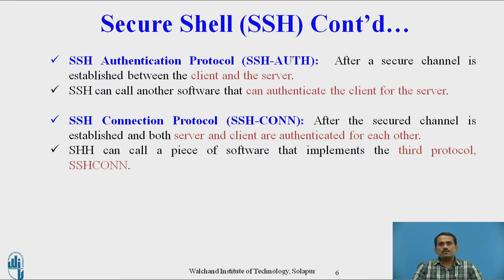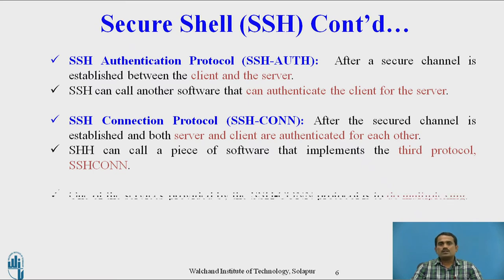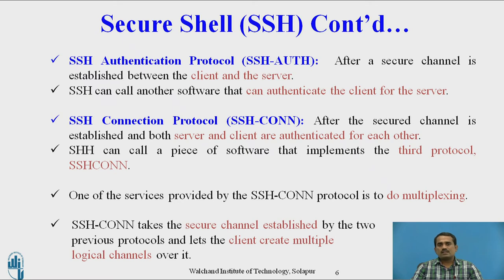After the secure channel is established and both server and client are authenticated, both the client and server can identify each other and communicate, because both are authorized users for that particular connection. SSH then calls a piece of software that implements the third protocol — SSH connection. One service provided by the SSH connection protocol is multiplexing. SSH takes the secure channel established by the two previous protocols and lets the client create multiple logical channels over it. After establishing the connection, both client and server can independently send and receive data without any problem, providing more security in SSH.